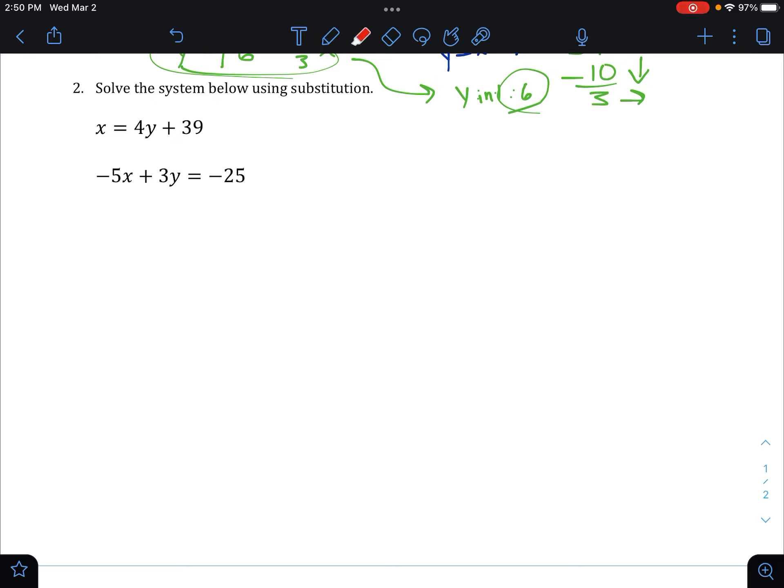So x equals 4 times the y, negative 10, plus 39. So that would be x equals negative 40 plus 39, which is just negative 1. So our answer here is negative 1, negative 10.